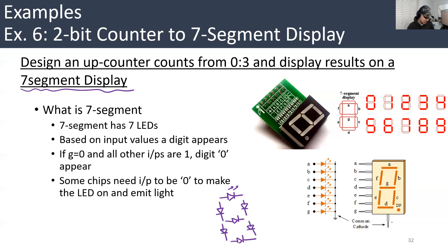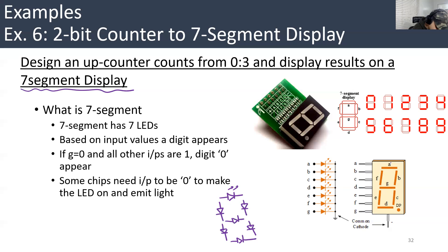So there are seven of them. We usually give each segment, each LED, a name or a letter — a symbol like A, B, C, D, E, F, G.